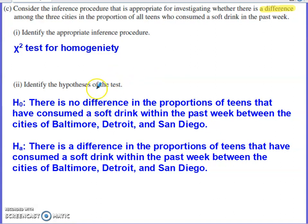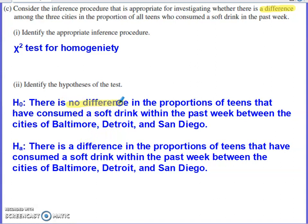Before stating the hypotheses, why is it homogeneity? If something is homogeneous, there is no difference; if it's not homogeneous, there is a difference. So when running the chi-square test for homogeneity, the null hypothesis is always that there is homogeneity across the three populations — in this case, the three cities — with respect to the proportion of teens who answered yes, that they consumed a soft drink within the past week. This hypothesis must be stated within context, which is definitely required for AP Stats FRQs.